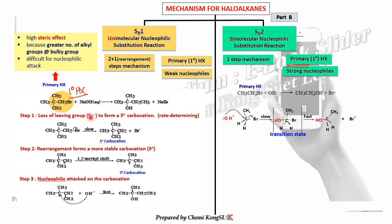Since a primary carbocation is unstable, rearrangement occurs to form a more stable carbocation: a methyl shift — one CH3 group moves to the carbocation site. Now a tertiary carbocation is formed, which is the most stable carbocation. This is the slow step and you must label the carbocation class at each stage.